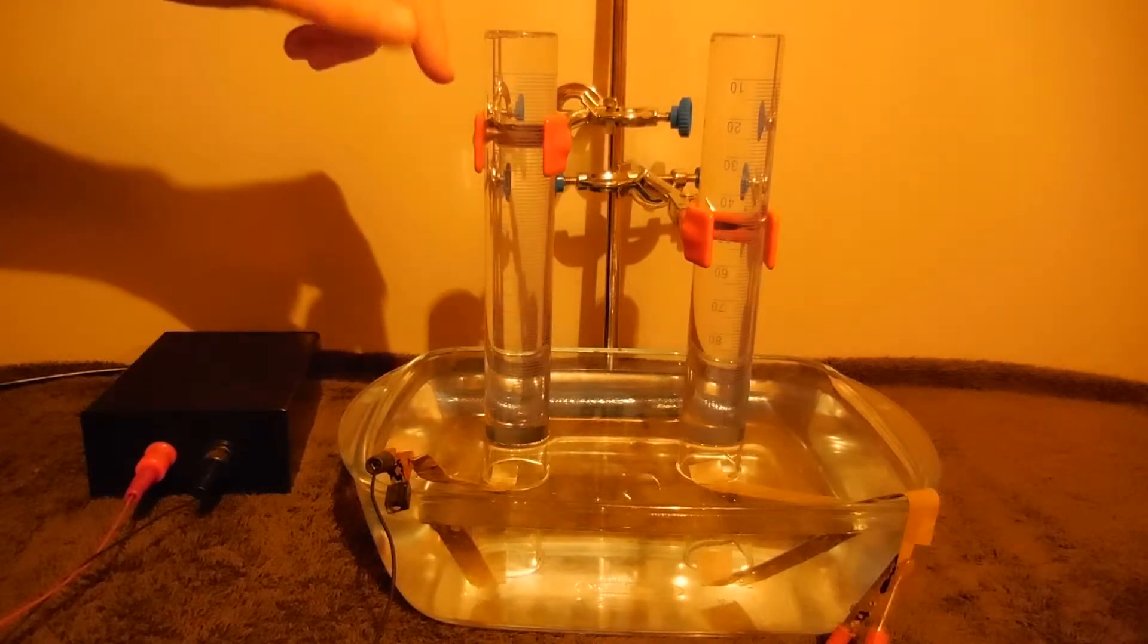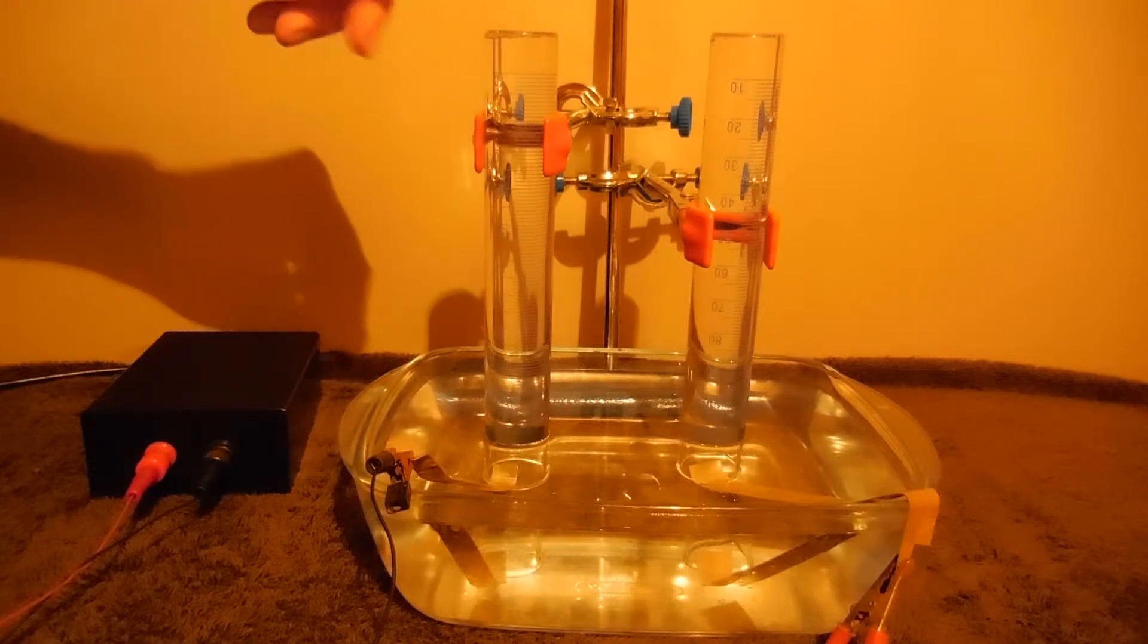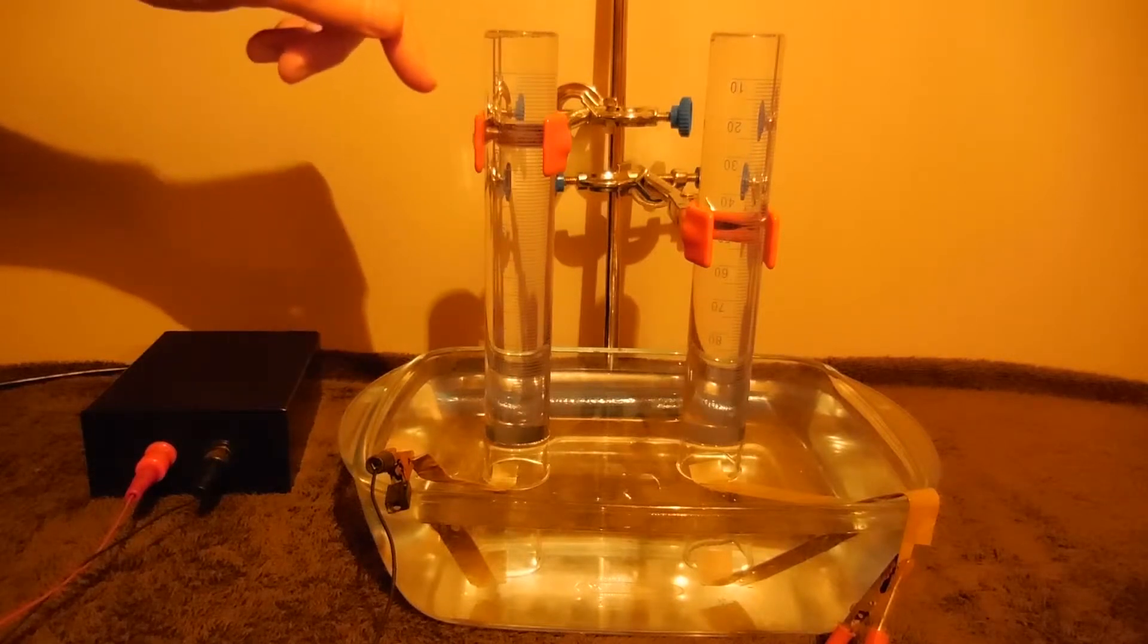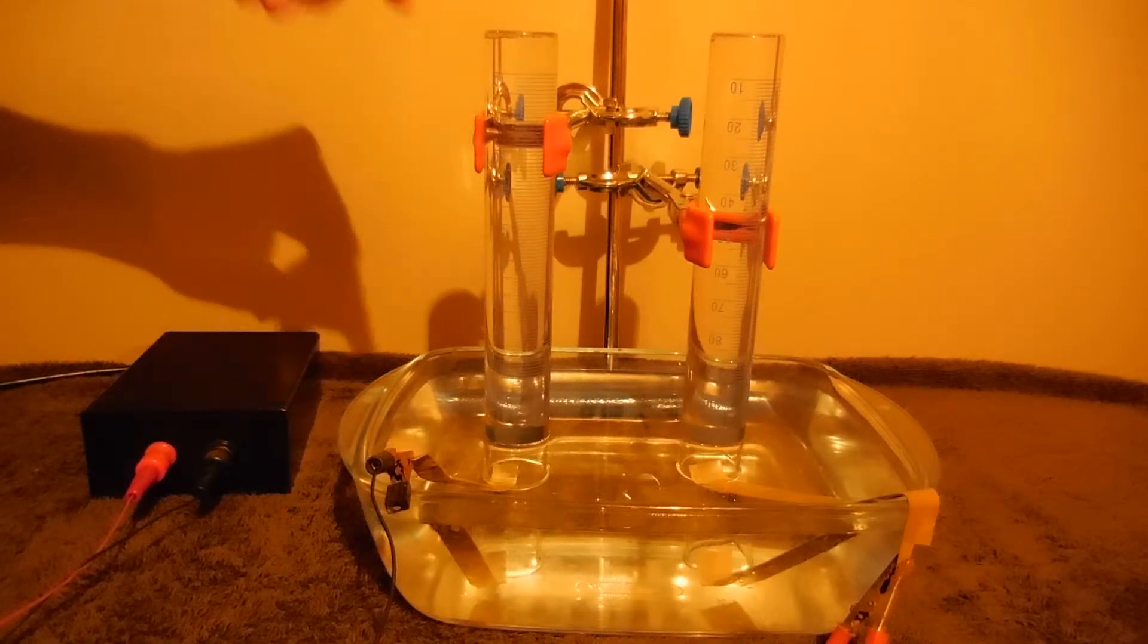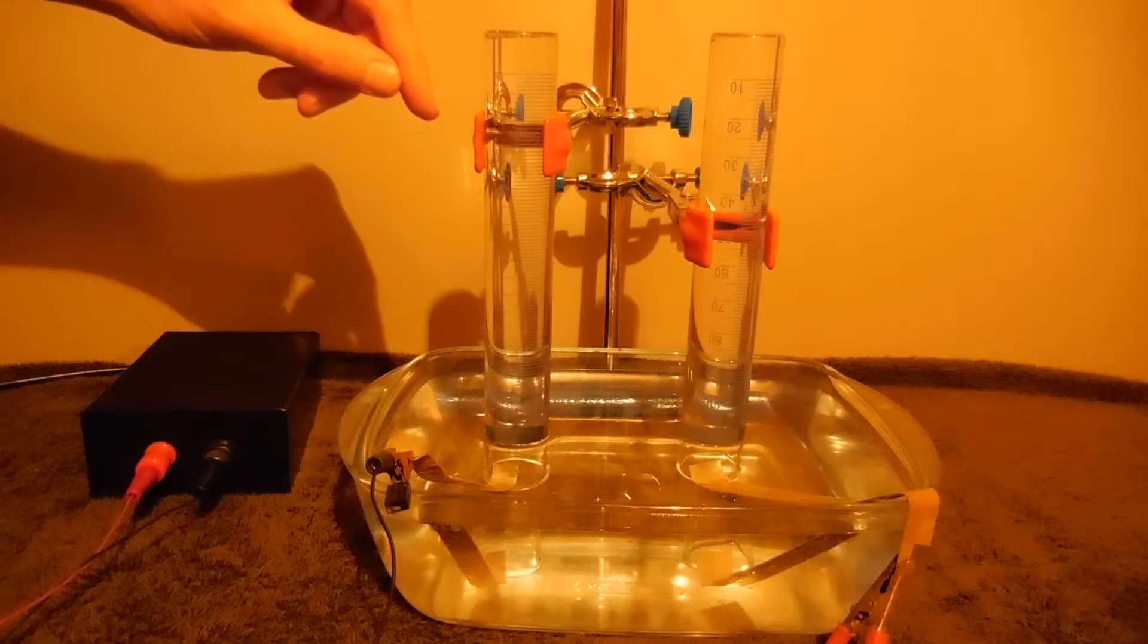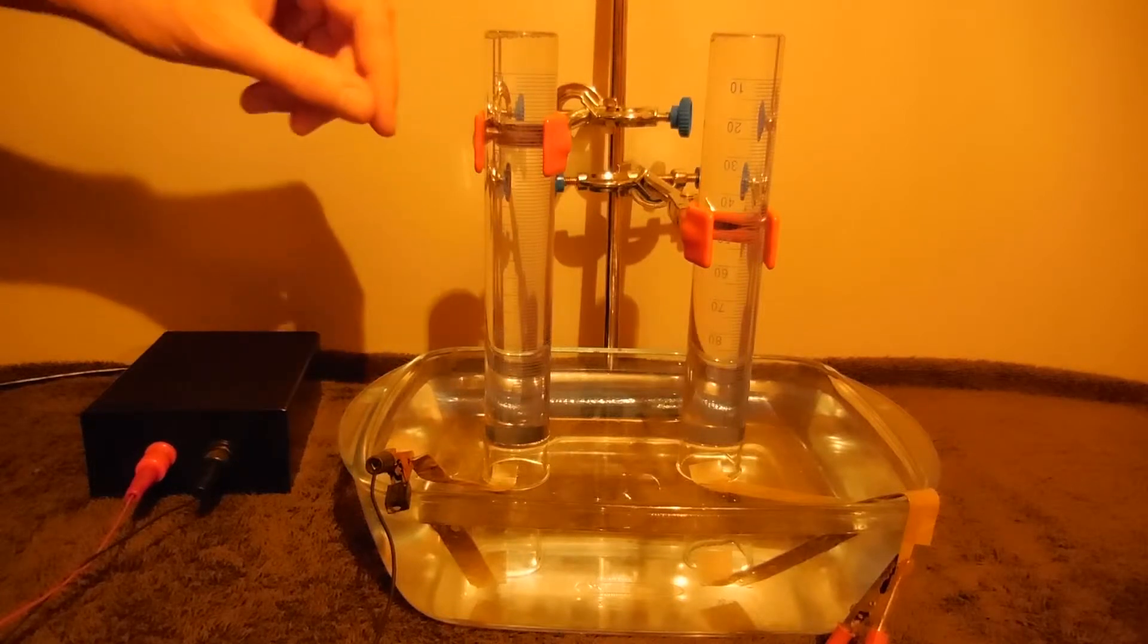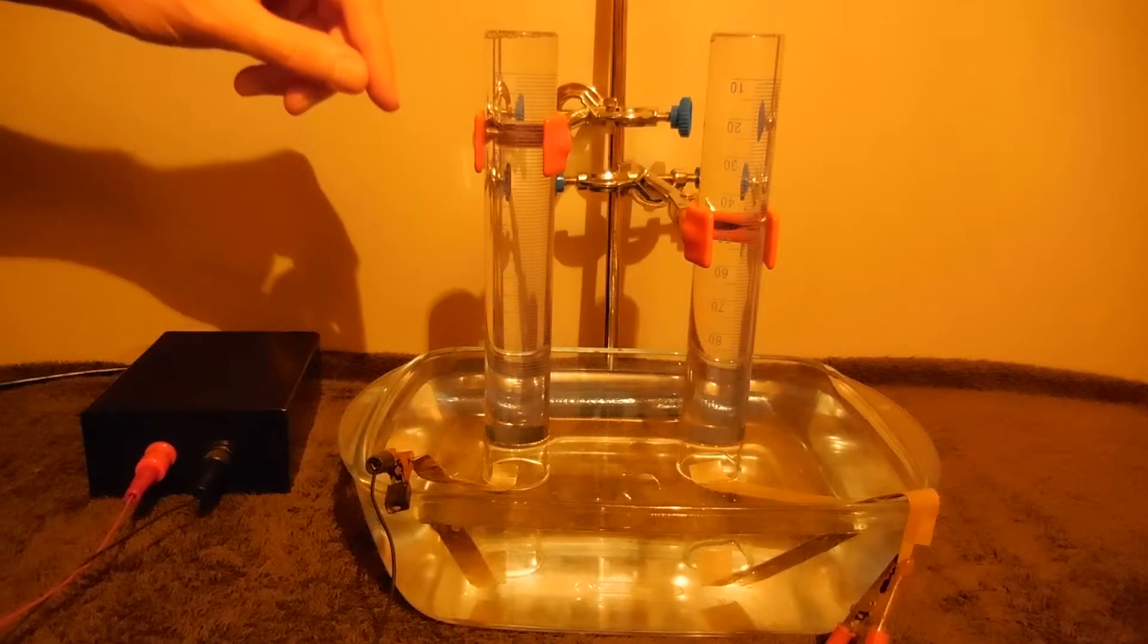If you already watched my previous video electrolysis of water with gold electrodes, you will instantly see the difference between these two cases. During electrolysis, aluminum hydroxide and aluminum oxide will be produced, clearly visible in water.